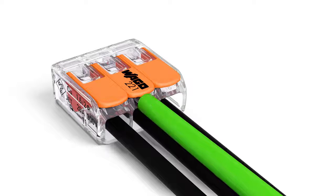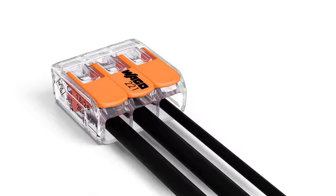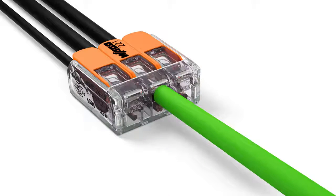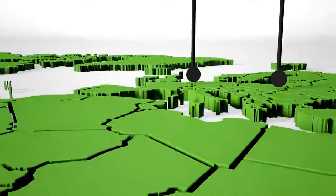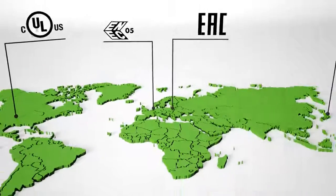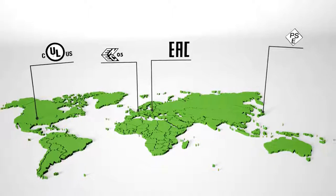Two easily accessible test slots, one in the conductor entry direction and one opposite this, provide easy test conditions even when installed. The 221 series supports many diverse applications beyond building installations.